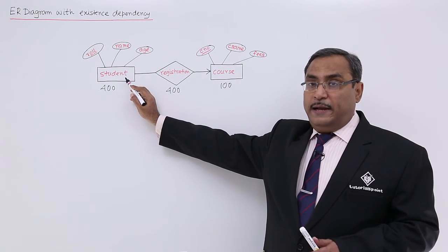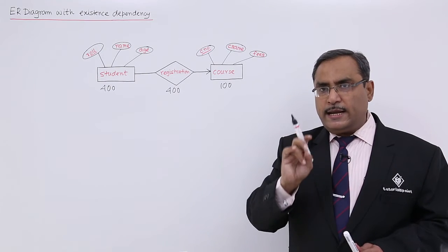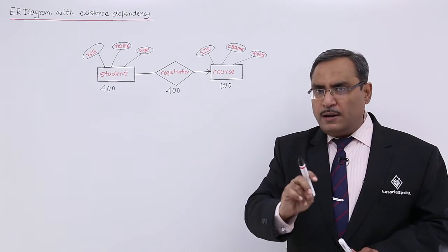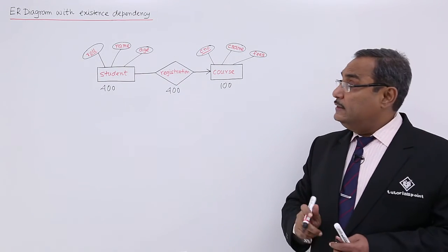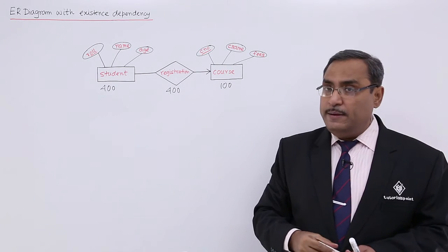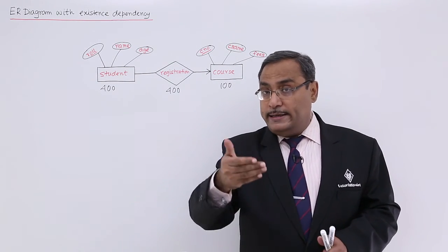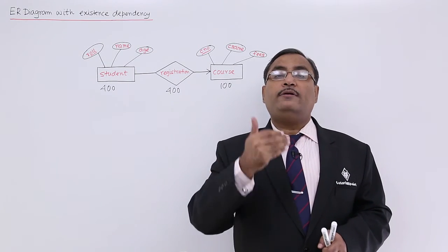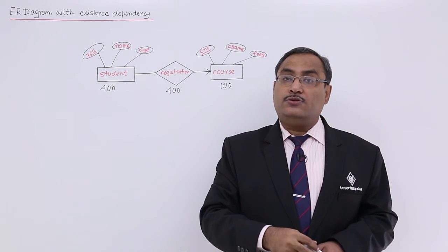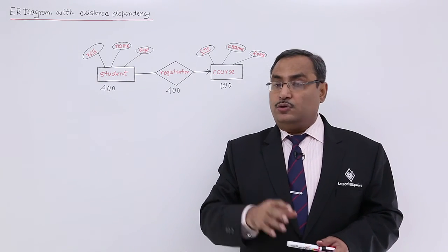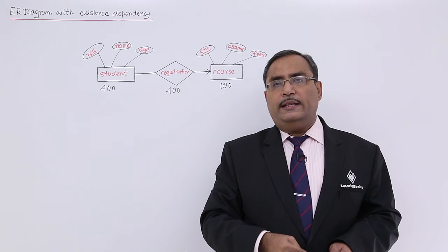This is known as existence dependency — a student entity cannot exist if his or her roll number is not appearing in the roll number of this registration. This concept will be very important while designing an ER diagram and in determining how to get tables from the ER diagram, including how many tables will be there. This concept will be required in the next videos, so please watch all of them as they will be in continuation. Thanks for watching.